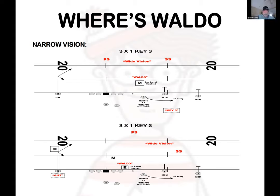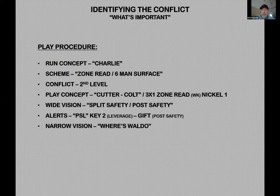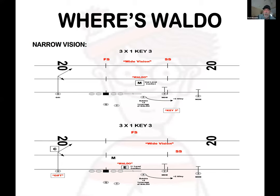Now we change our play procedure. Our run concept becomes 'Charlie' — a zone read with a six-man surface. We've added a tight end or a back into the blocking surface. He knows on a six-man surface it is a second-level conflict read. The play concept is 'Cutter' or 'Cold,' a three-by-one zone read, but now we get off our key game — key one, two, or three. That's the game-plan part: do I want to attach bubbles, throw the key screen to the Y, throw the key to the outside guy, or build it with motion using what we call our 'comet'? We're not changing the play — we're just changing the presentation to the defense.